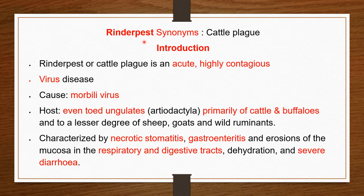Rinderpest's famous synonym is cattle plague. Previously, there was very high mortality and morbidity, just like a plague. Because many animals were dying and many animals were affected, just like a plague, so it is named as cattle plague.